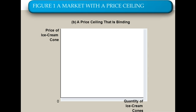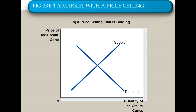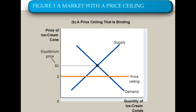Let's take a look first at a price ceiling. A price ceiling works like this. We have our supply and demand — we'll use ice cream here as our example. Our equilibrium price is going to be $3. There's our price ceiling — we've set it at $2. You'll notice it says a price ceiling that is binding, or we'll sometimes use the word effective. Why is this price ceiling binding? It's binding because it's actually going to affect this market.